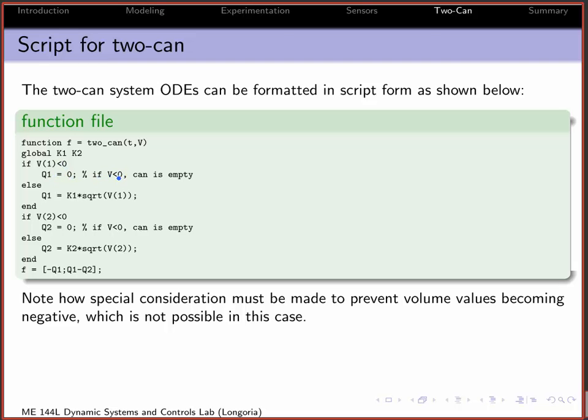That means if the volume has gone less than, volume 1 has gone less than 0. Otherwise, Q1 is just that equation that we like so much. And likewise for V2, you do the same thing. And then here, this f here just forms those two equations very simply. Minus Q1, Q1 minus Q2. Very compact notation. It's nice about scripts sometimes.